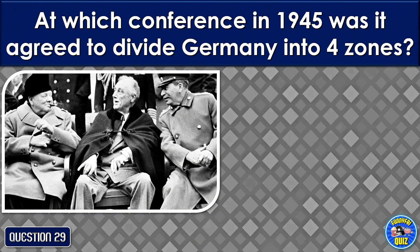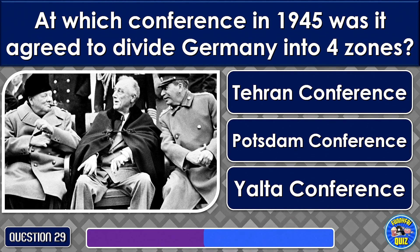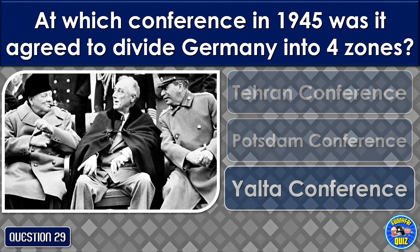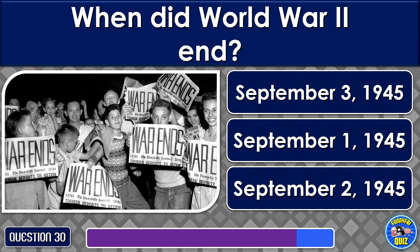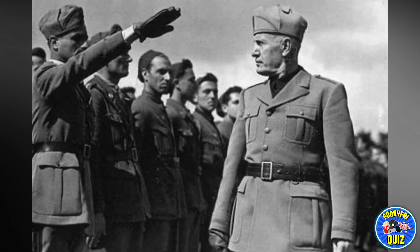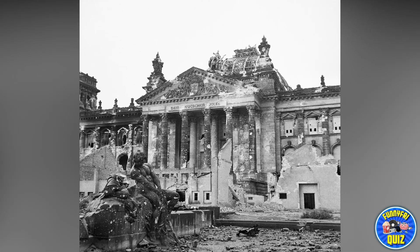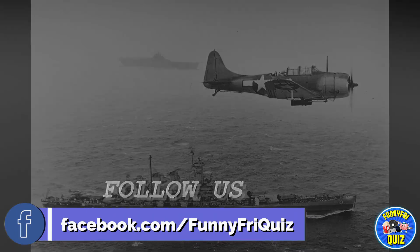At which conference in 1945 was it agreed to divide Germany into four zones? The Yalta Conference. When did World War II end? On September 2nd, 1945.